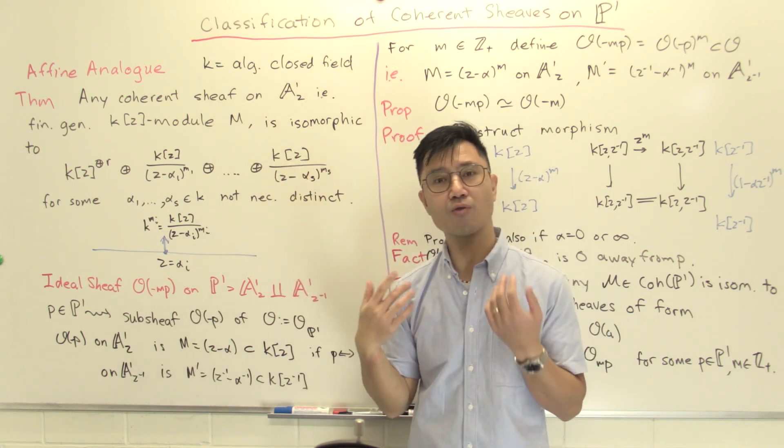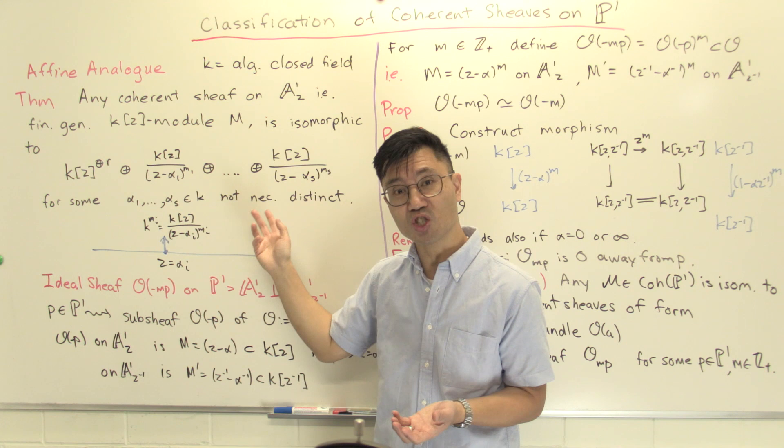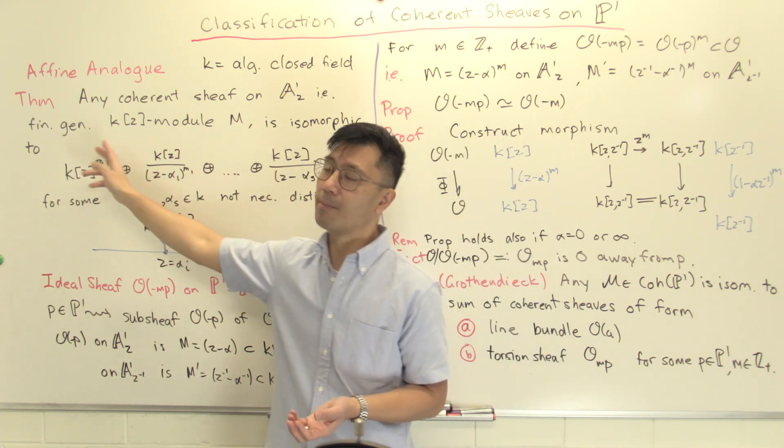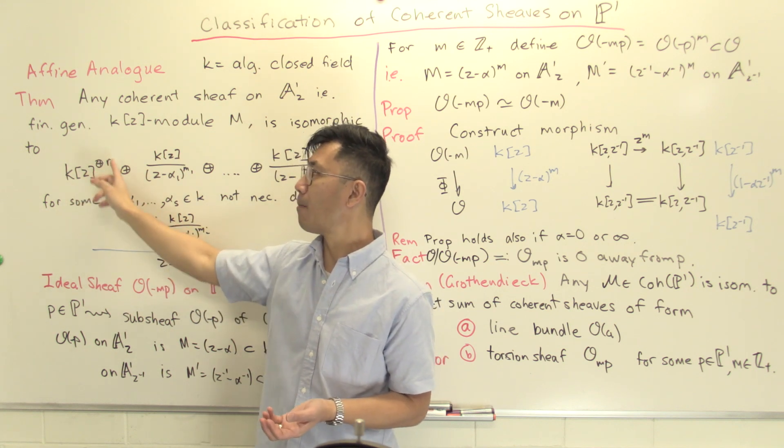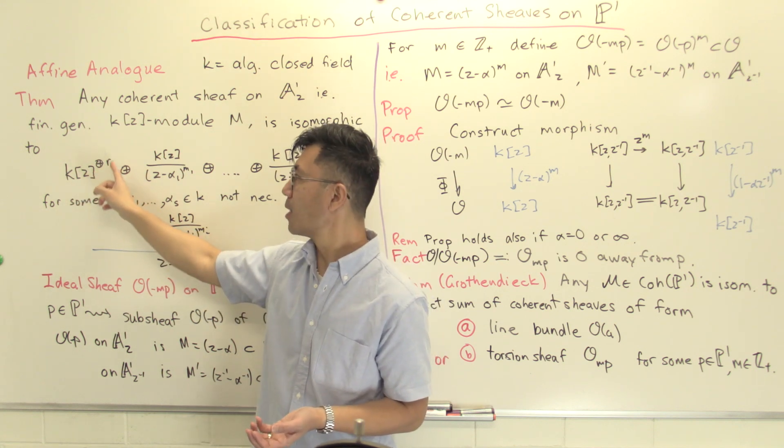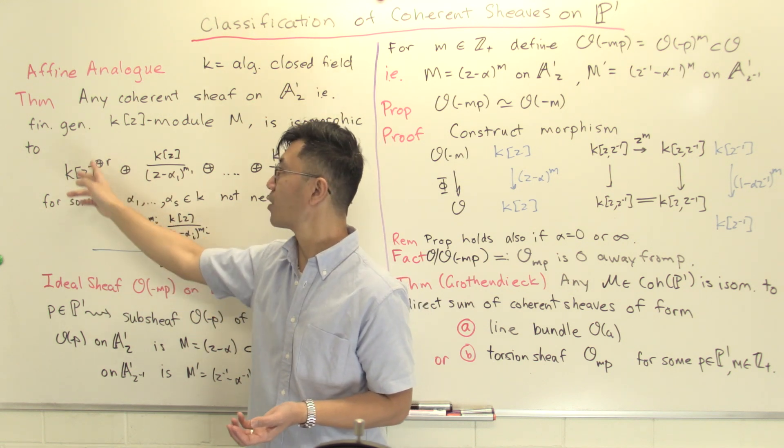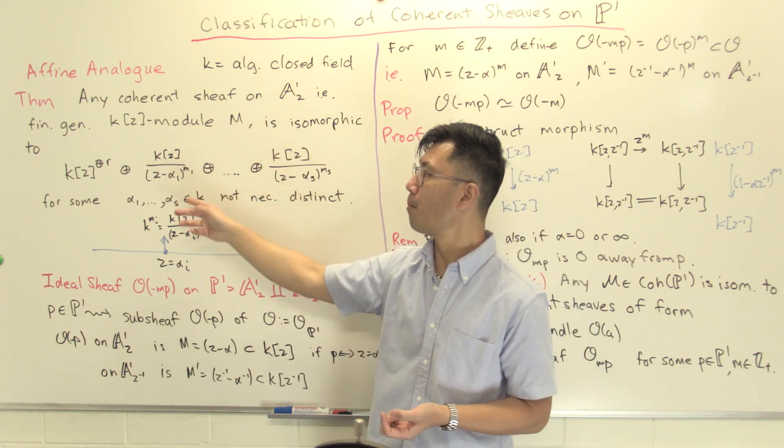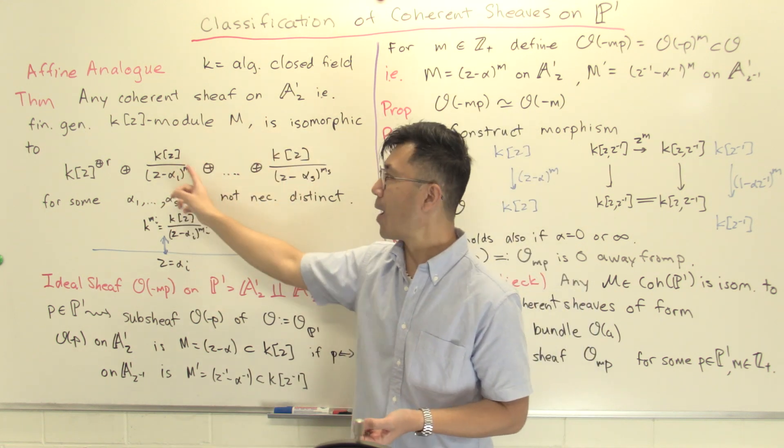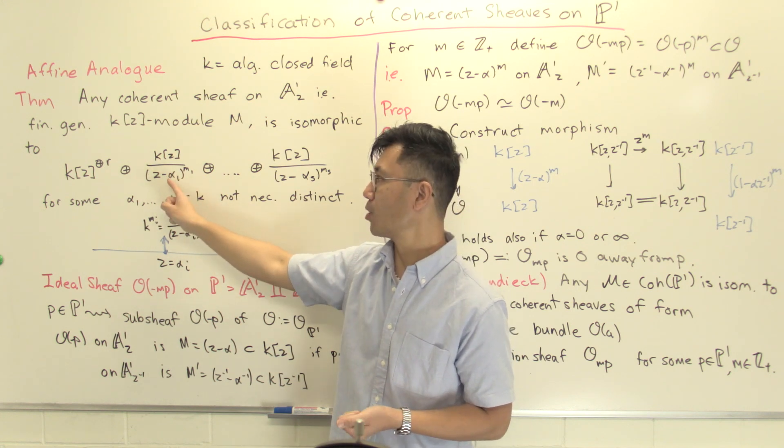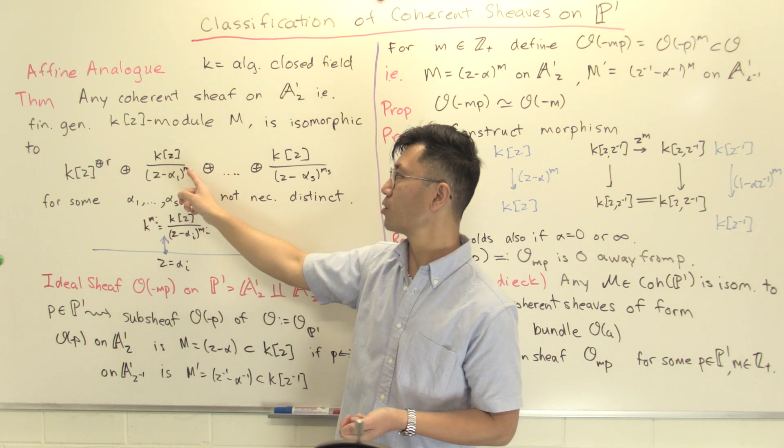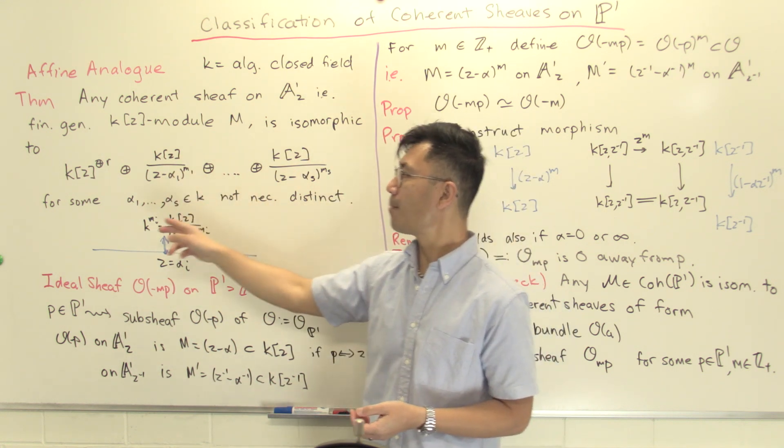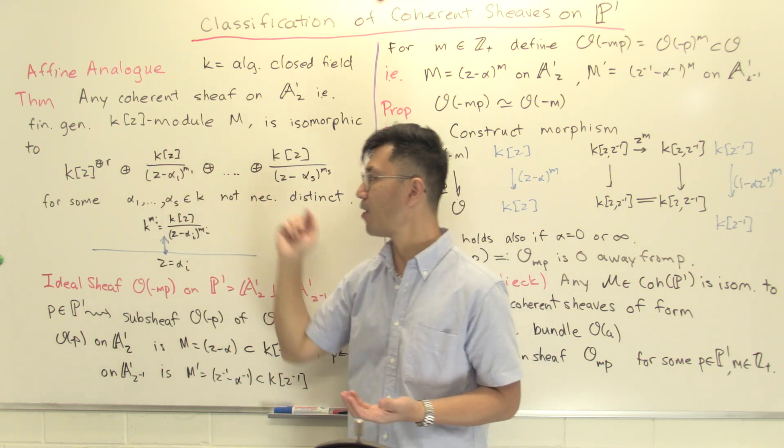Any such module is a finite direct sum of cyclic modules. We can write it in this form: there's a free part K[Z]^R for some number of copies R, often called the rank of the module. And you can write all the other cyclic modules of this form: K[Z] modulo some power of a linear polynomial, so K[Z]/(Z-α_1)^{m_1} and so forth, down to S of them. These alphas are just elements of K; they don't have to be distinct, but there's a finite set of them.